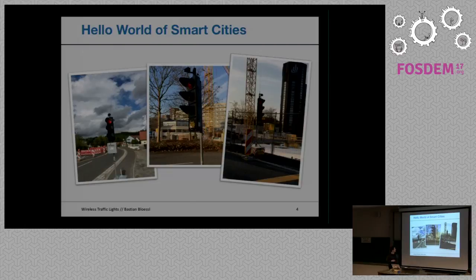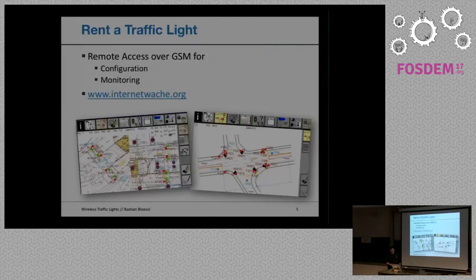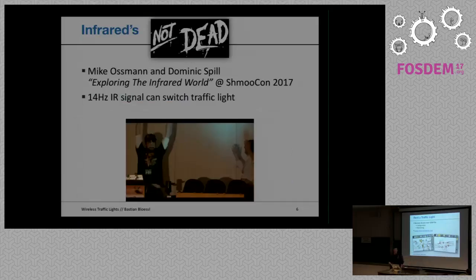In Germany we have some wireless traffic lights. There was a post on Hackaday about what I'm showing, and in the comments people were confused — somebody explained that they have wireless traffic lights in Europe. It's about mobile traffic lights. A shout out to my friends from Internetwache, because they found the same traffic lights in the GSM network — scanning around the internet, they found these wireless traffic lights actually have a GSM uplink for monitoring and configuration. This was covered in the news last year.